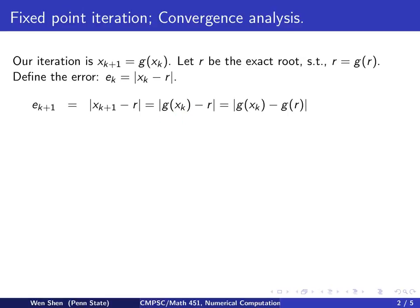And then the r here, we're going to write it as g(r), since r is a fixed point. So error equals now the absolute value between the distance of the g function at x_k and r.